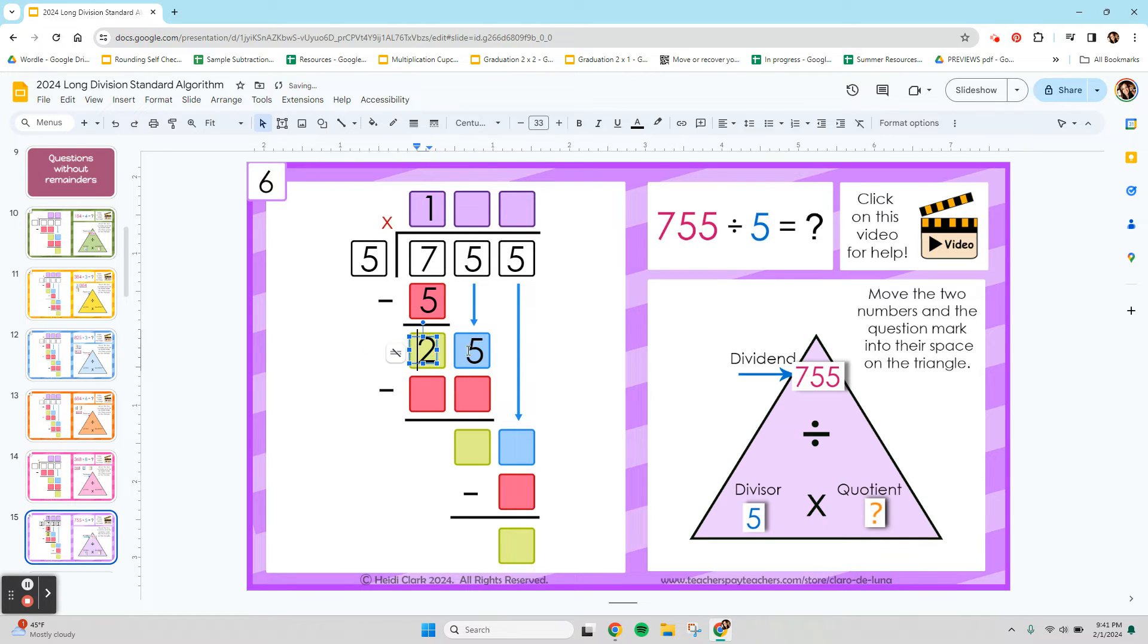We have a 25 to work with. So how many fives fit into 25? Or if you skip count your fives, how close can you get to 25? Well, 5 times. Now we multiply it back down. 5 times 5 is 25. So it fit in perfectly.